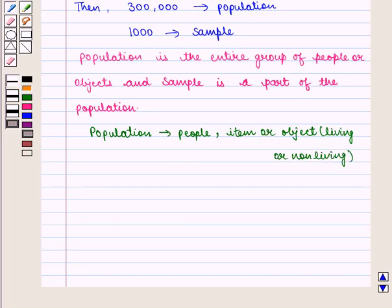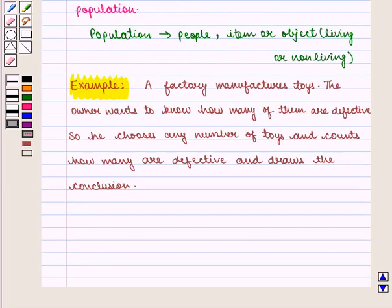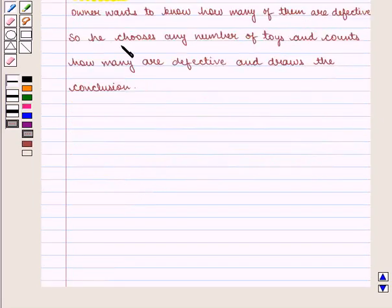It depends on what do we want to know. For example, a factory manufactures toys. In this case, the owner wants to know how many of them are defective. So he chooses any number of toys and counts how many are defective and draws the conclusion. In this example, the toys manufactured is the population.